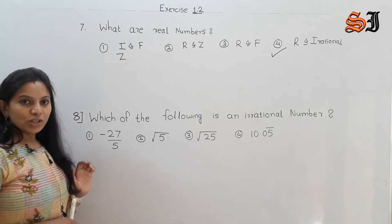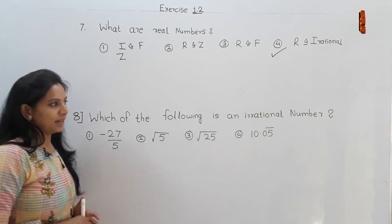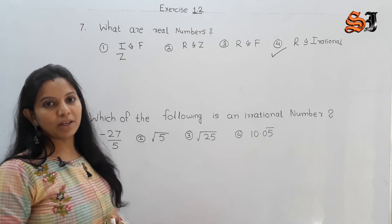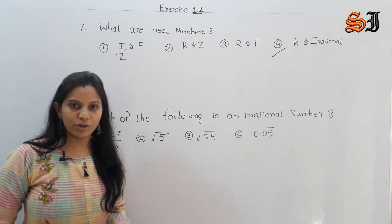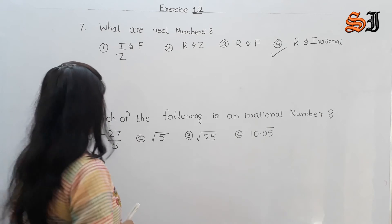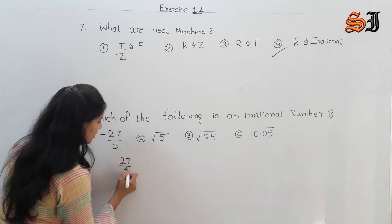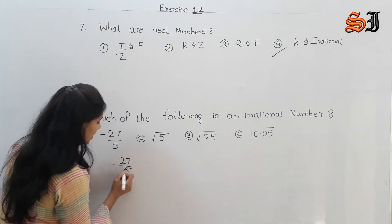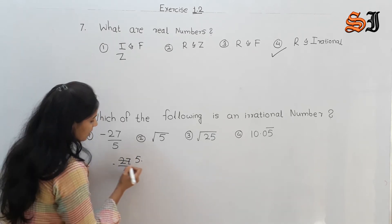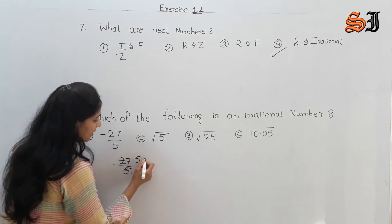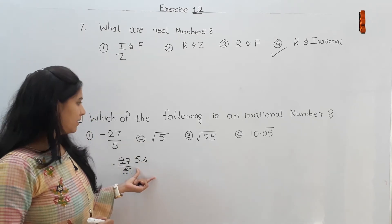Next question, the 8th one: Which of the following is an irrational number? Irrational numbers are non-terminating and non-recurring. Now, consider root 27 divided by 5: negative 25, remainder 2 — it terminates. So that is not irrational.